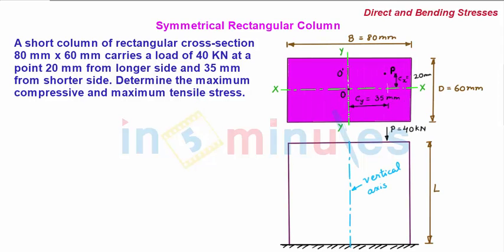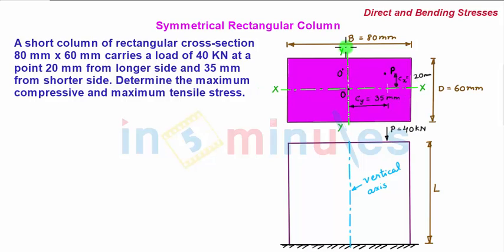We first draw the figure of this given rectangular cross-section column. This is a front view and this is the top view which shows the cross-section of the column. We see we have centroidal xx-axis and centroidal yy-axis which pass through the center, since our section is symmetrical.